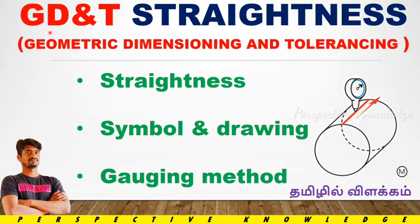Hi everyone! Today we will talk about GD&T Straightness. GD&T is Geometric Dimensioning and Tolerancing. In our channel, we will talk about GD&T symbols and engineering drawings, which are already uploaded on our YouTube channel. The link is in the description box. If you want to check that, you will have a clear explanation.